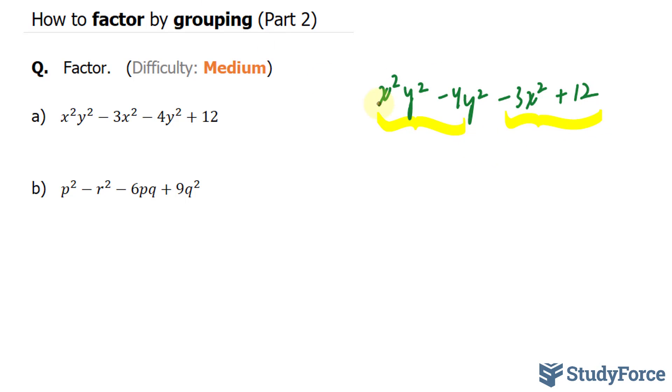In the first group, I noticed that this expression was the difference of squares. Take a look. x squared y squared is a perfect square, and minus 4y squared, namely this part, is also a perfect square. So I broke it down into xy minus 2y times xy plus 2y.